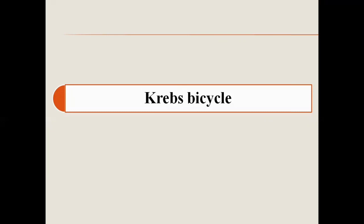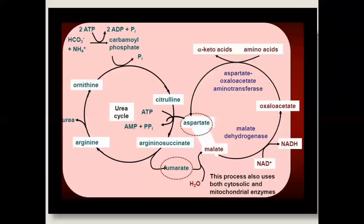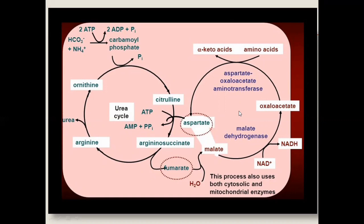Today's lecture is about the Krebs Bicycle. As the name indicates, Krebs Bicycle means that there are two cycles running. One is the urea cycle and the other is the Krebs cycle, or TCA cycle. The urea cycle is also known as the Krebs-Henseleit urea cycle, and the Krebs cycle is the TCA cycle — two different cycles.